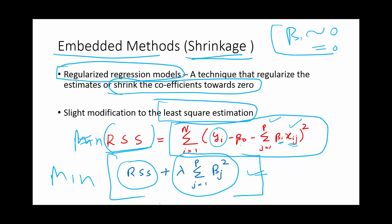What is the idea behind this? The idea is to ensure that the beta values get low values. The benefit is that some unimportant variables which are having a very high impact on your target variable should get low beta values, so that it gives a better prediction.